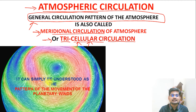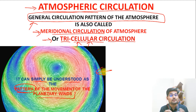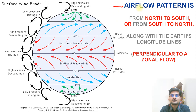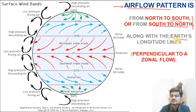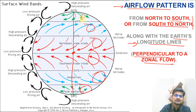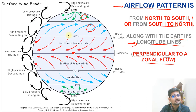Basically, atmospheric circulation is understood as the pattern of movement of planetary winds. In geography we are concerned about spatial patterns, which is why this is a purely geographical concept in climatology. There is an airflow pattern from north to south or south to north — that is what we call meridional. Along the earth's longitudinal lines, it is called meridional circulation, or perpendicular to a zonal flow. You can see different zones of air circulation across north to south from zero degrees.